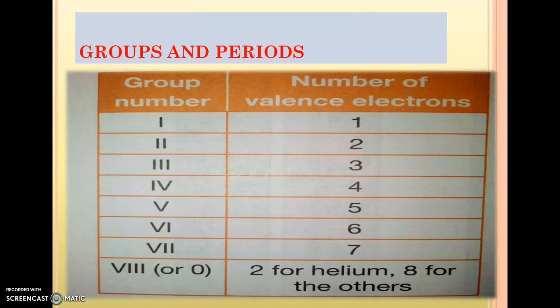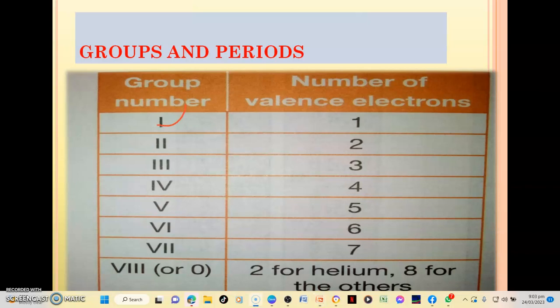Here is a diagram showing the groups and the number of valence electrons. Those in group one have one valence electron. Those in group two have two valence electrons. Group three have three, group four have four — just like that up to seven. Those in the eighth group: helium has two valence electrons, while the other elements have eight valence electrons, which is why they are stable.